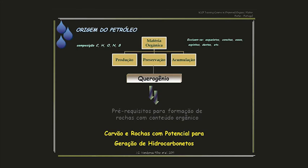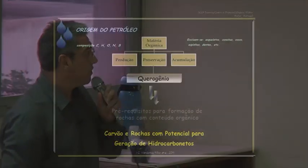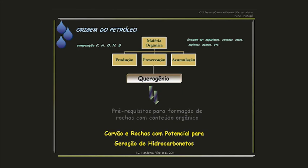A matéria orgânica é dividida em duas frações: o querogênio, que é a fração insolúvel e particulada; e o betume, que é a fração solúvel e molecular. O querogênio é a matéria orgânica visível ao microscópio — consegue-se identificar e isolar, e ver qual grupo de organismos produziu aquele tipo de matéria orgânica. Esses são os pré-requisitos para a formação de rochas com conteúdo orgânico.